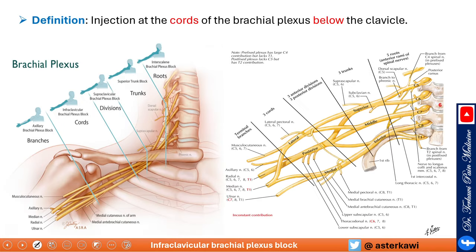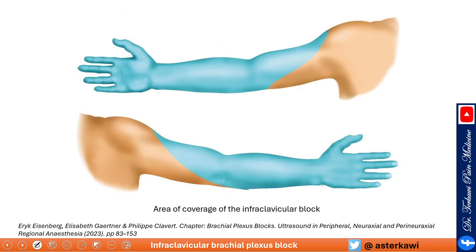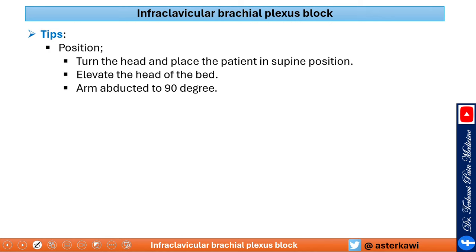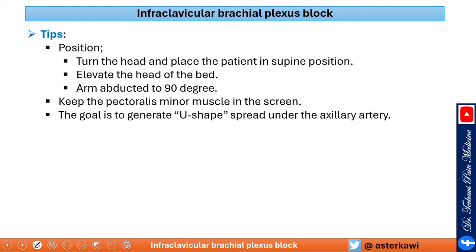The infraclavicular brachial plexus block is an injection at the level of the cords of the brachial plexus, below the clavicle. This block covers the cord level, misses the intercostal brachial nerve, and is good for procedures at or below the elbow. It is a phrenic-sparing block. Position is key, and importantly you need to keep the pectoralis minor muscle in view. You are ultimately looking for a U-shaped spread underneath the axillary artery.